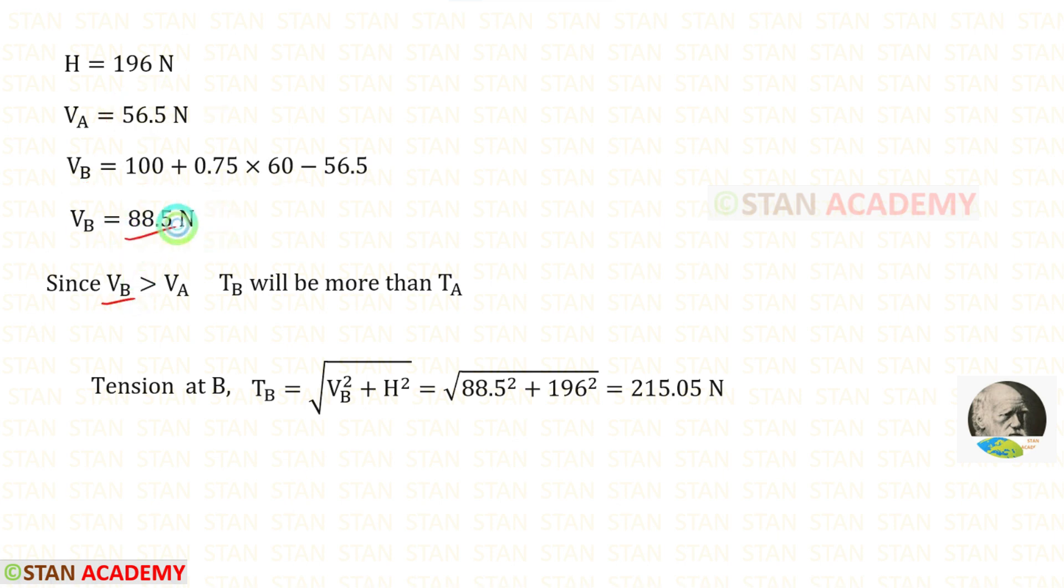Since VB is greater than VA, the tension at B will be more than tension at A. We know that point B is located on the right end, so the tension will be maximum at the right end. This is what we have been asked in the question to prove. Now we have proved that.